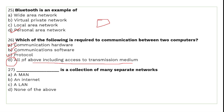The internet is the collection of many separate networks. Internet is the network of networks — it is formed by connecting many networks together into one large interconnected system.